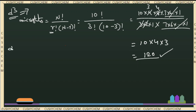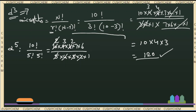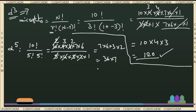Similarly, for d5, we calculate: 10! / (5! × (10 − 5)!) = 10! / (5! × 5!). The 5! terms cancel, leaving 10 × 9 × 8 × 7 × 6 divided by 5!. After cancellation — 5 cancels, 2s cancel, 3s cancel — simplifying gives 36 × 7 = 252.